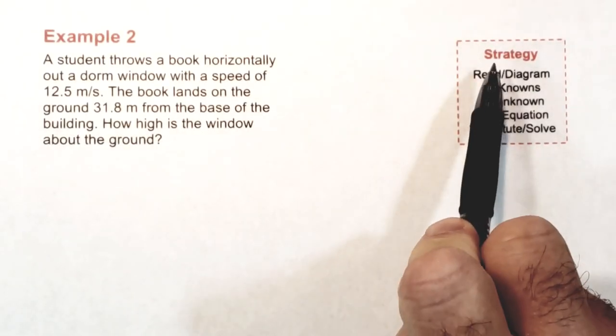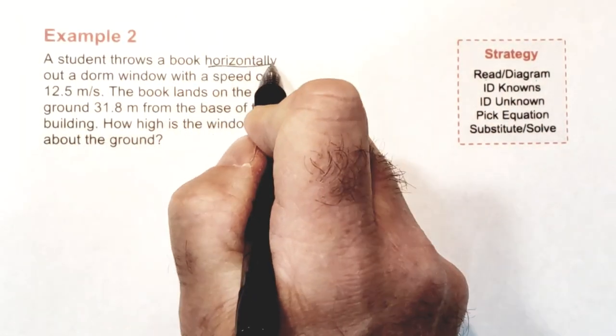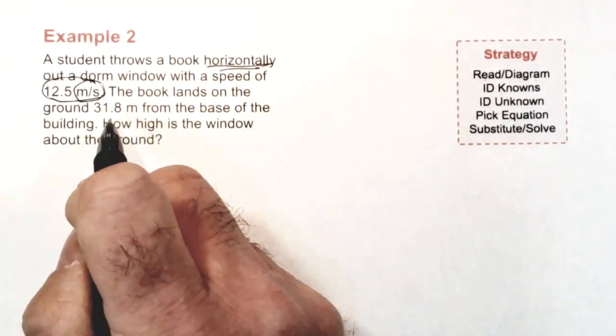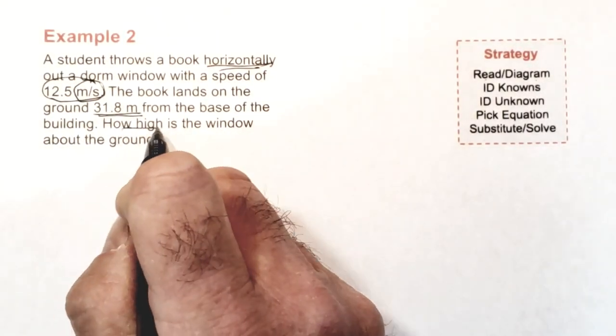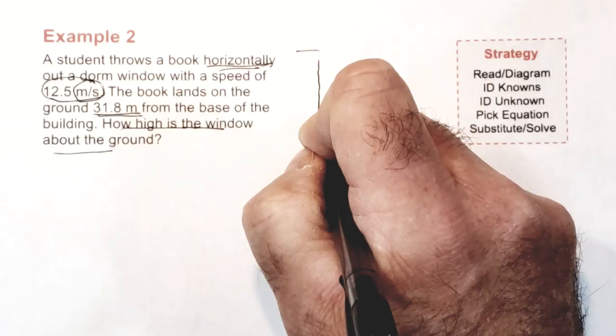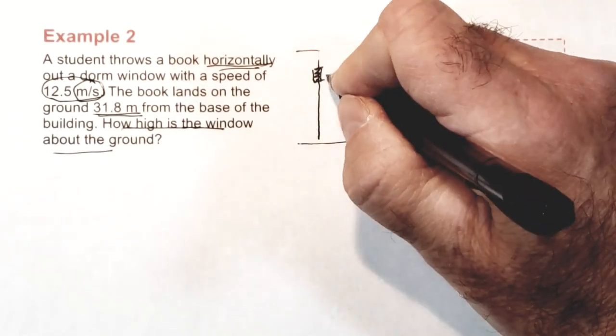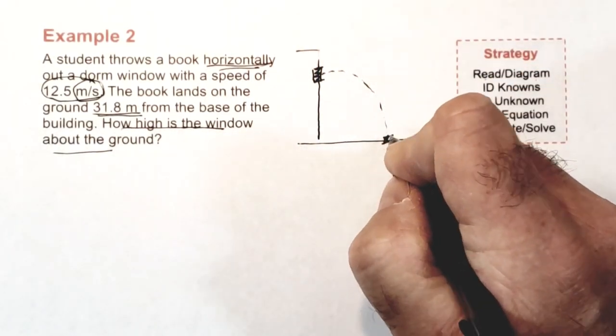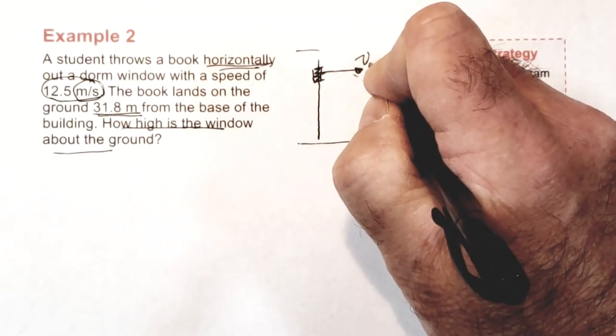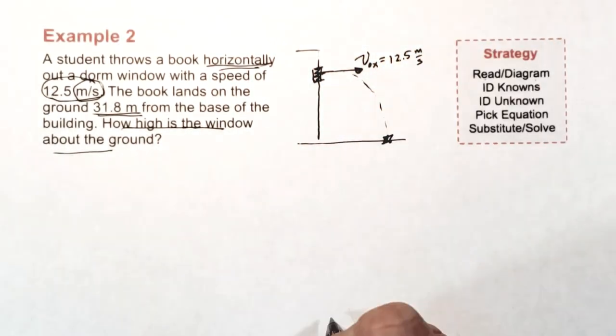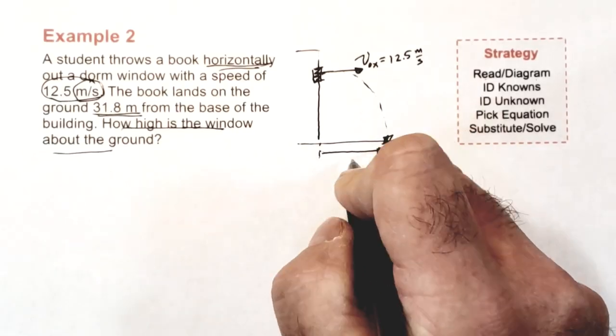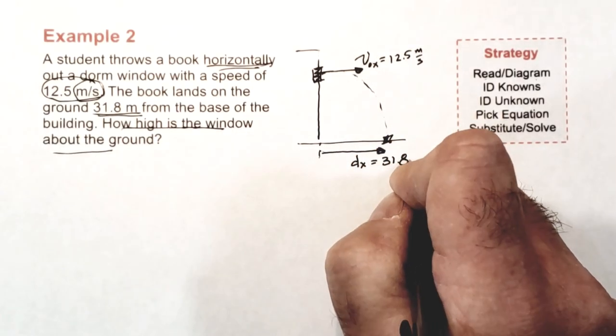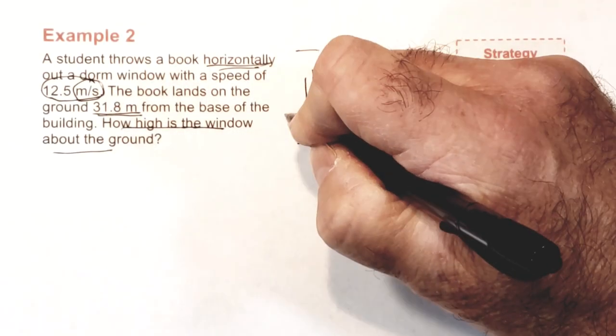So here's my example two problem with a problem-solving strategy listed. My first step of the strategy is to read the problem carefully and to diagram it. As I read the problem, I'm going to give attention to the numbers and the units, making an effort to determine whether I know DX, DY, or VOX. As I diagram, I'm going to represent the initial position of the book, the final position of the book, and label the DX, the DY, and the VOX on the diagram.